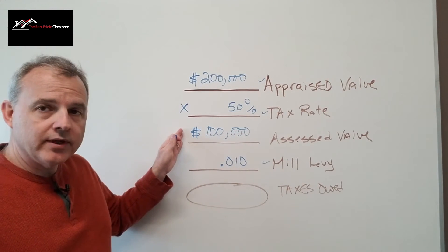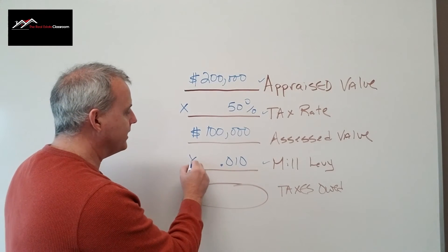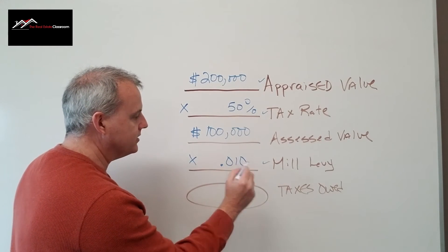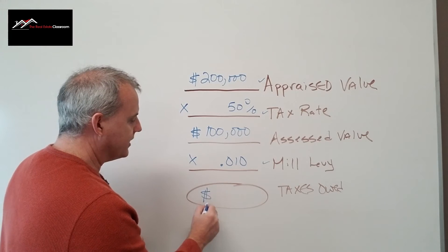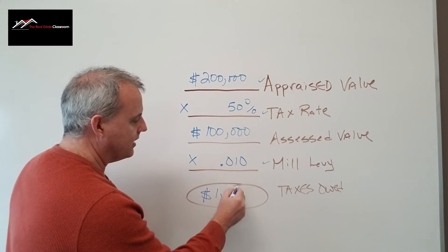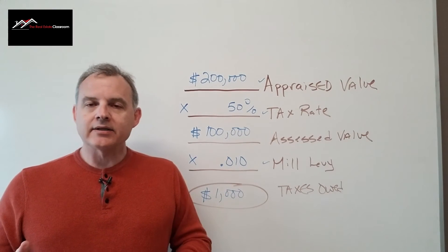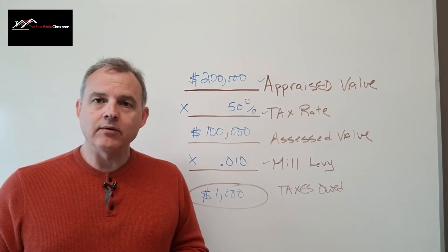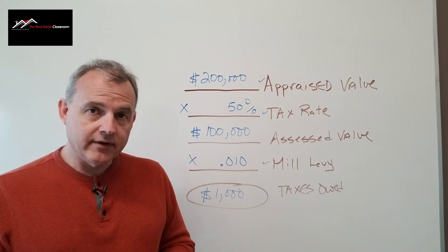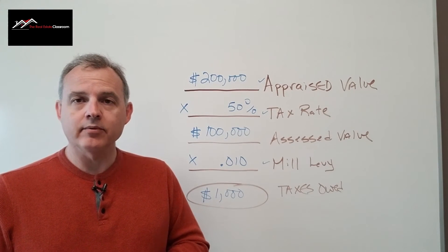Then we take $100,000 and multiply it by 0.010. That should give us a calculation of $1,000 tax that's owed. That's how we use the mill levy method of calculating property tax.